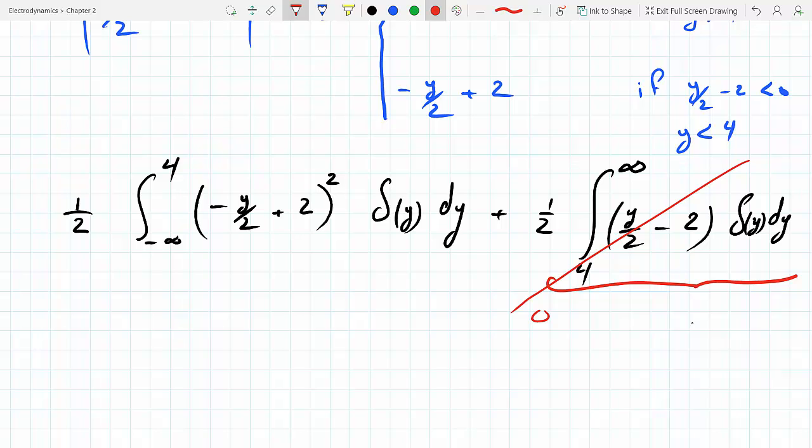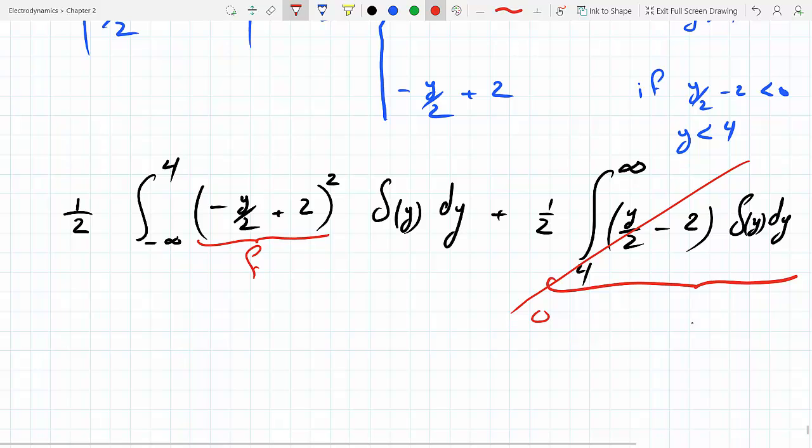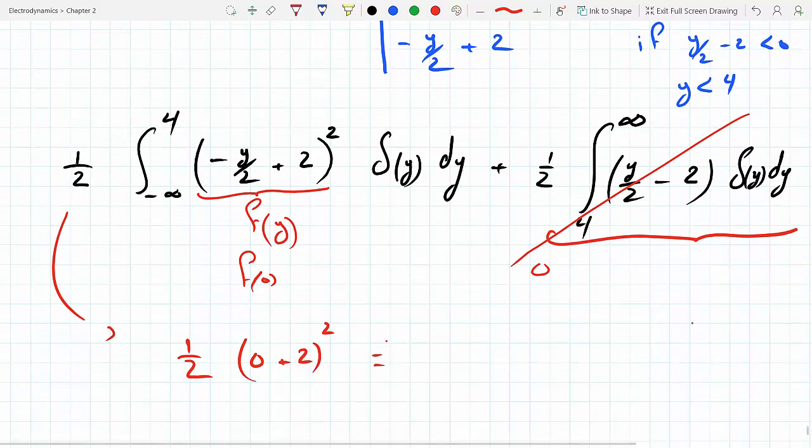Here 0 is between minus infinity and 4, so if this is f of y, you're gonna get the function evaluated at 0. So the answer will be one half. You replace y with 0, so you get 0 plus 2 squared, and the other piece is 0, so you get 2.